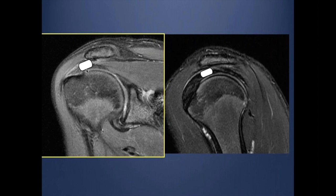If the tear extends from one surface to another — from the bursal to the articular — we call it a full thickness tear. As you see here, the full thickness tear does not have to involve the whole tendon, because the supraspinatus extends across a width. This is why we talk about the width concept of each tendon. There could be a full thickness tear but part of the tendon is still intact; we still call this a full thickness tear.